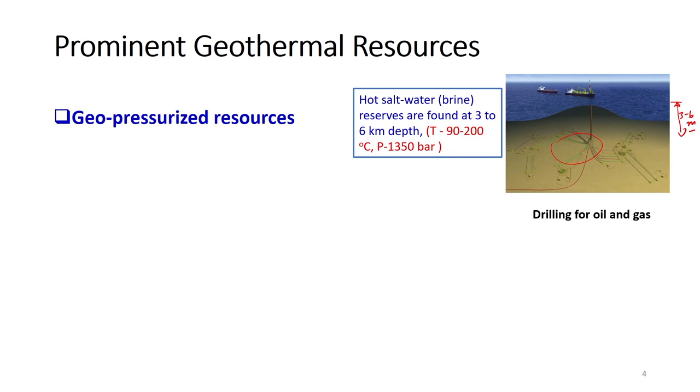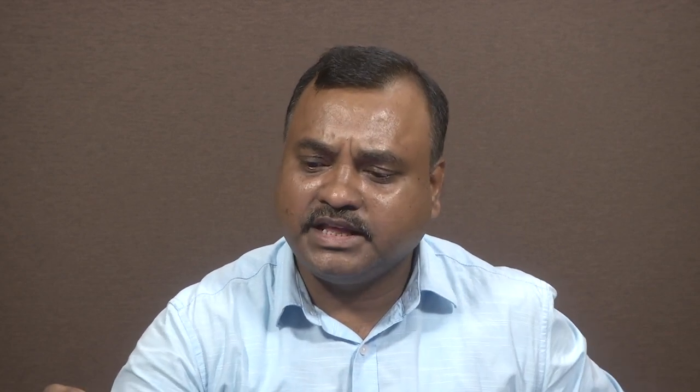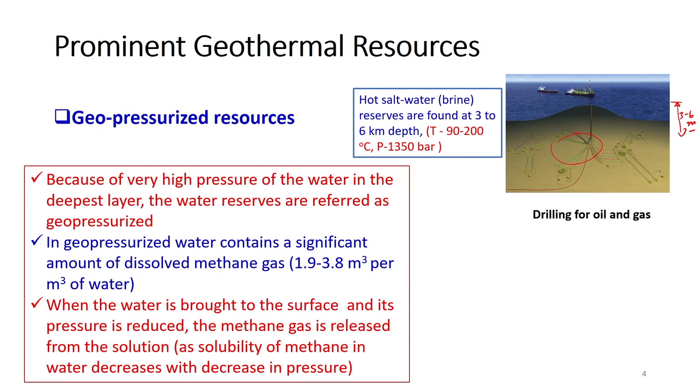When drilled, the fluid comes out because of very high pressure. Methane available under these geopressurized reservoirs is dissolved in the geothermal fluid (brine solution). If the pressure is reduced, it starts separating and we can extract the methane by gravity separation. At the same time, we can utilize the mechanical/hydraulic energy from the ground, as well as the high-temperature fluid for electricity generation via a thermodynamic cycle. The water reserves are referred to as geopressurized because of this very high pressure.